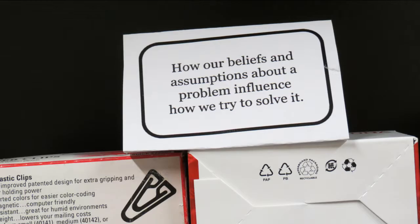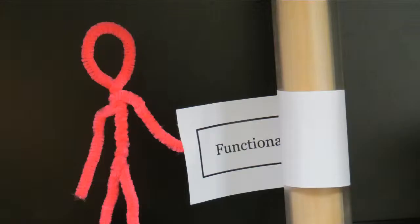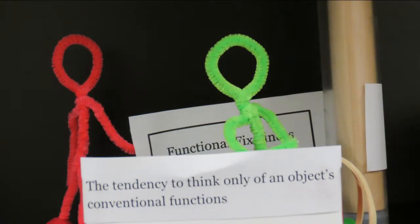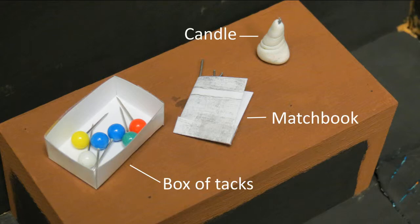One way to demonstrate the impact of Einstellung is through a phenomenon called functional fixedness, our tendency to think only of an object's conventional functions. For instance, in a test called the candle problem, participants were given these materials and were instructed to mount the candle to the wall.